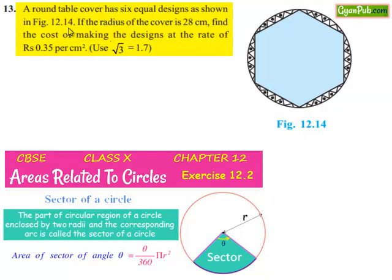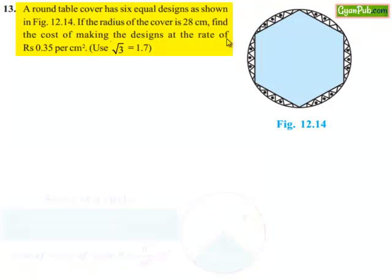Moving on to the 13th question: a round table cover has 6 equal designs as shown in figure 12.14. If the radius of the cover is 28 cm, find the cost of making the designs at the rate of Rs 0.35 per centimeter square.